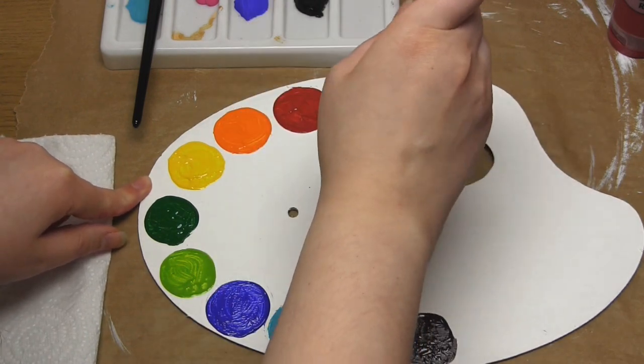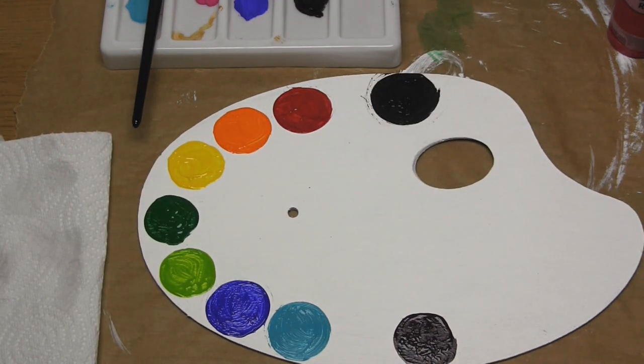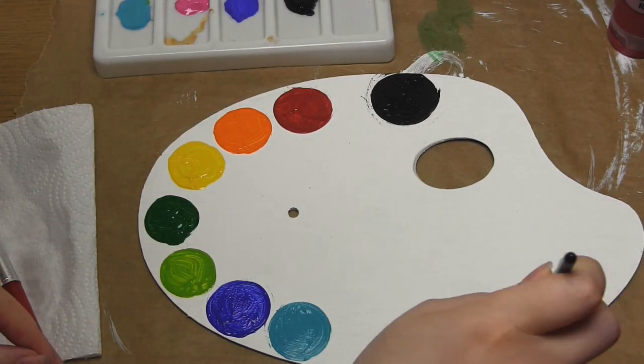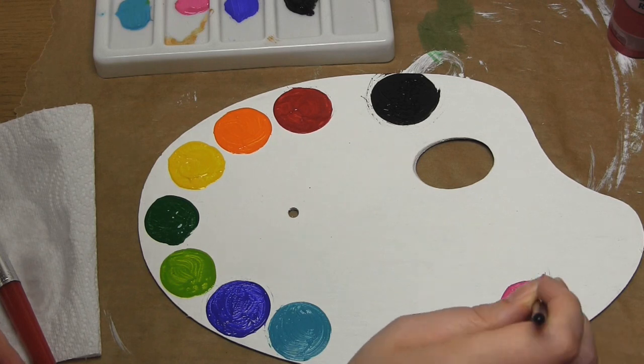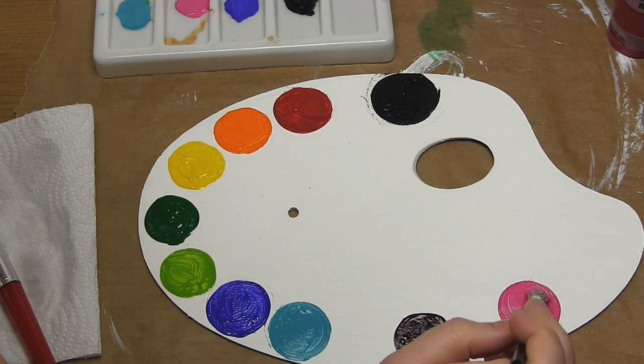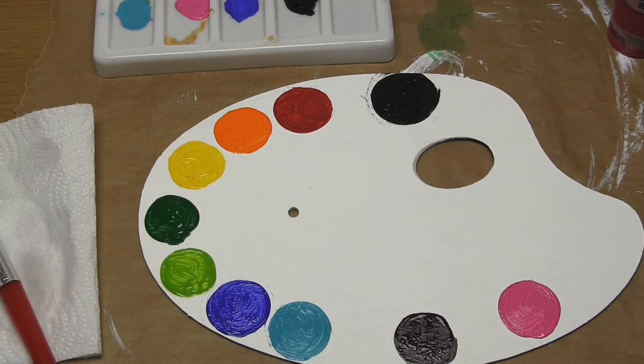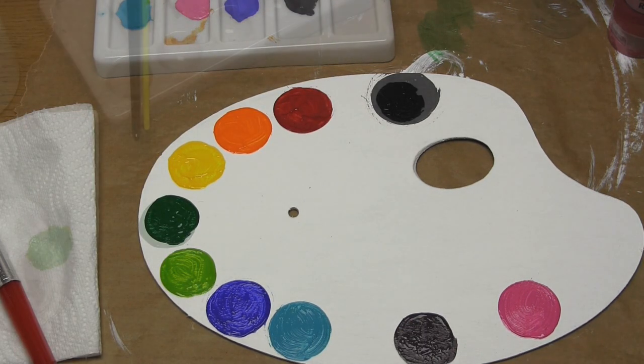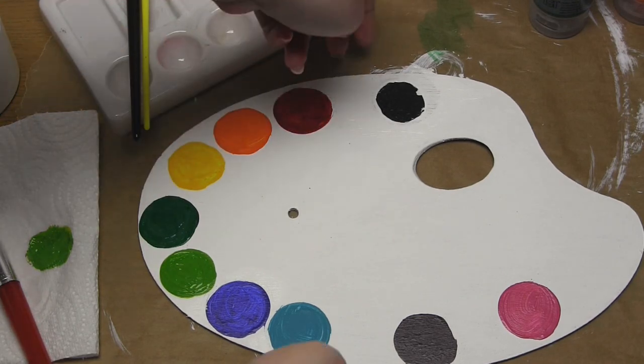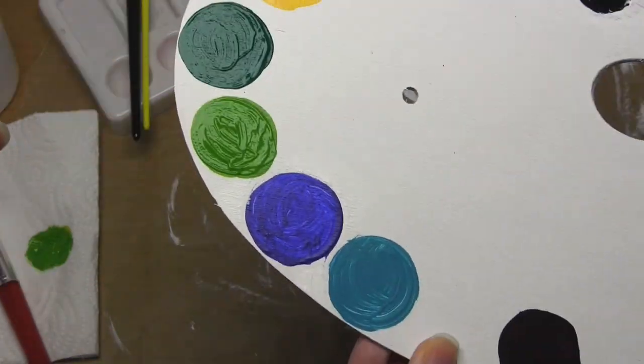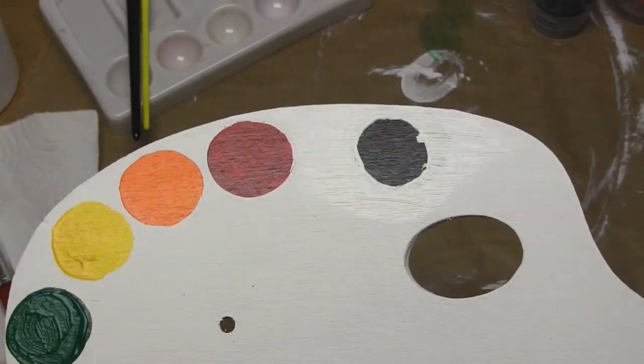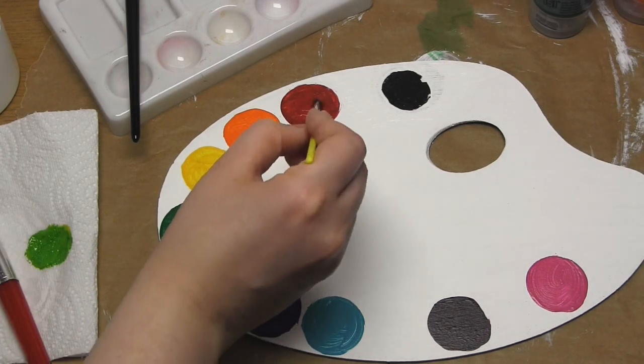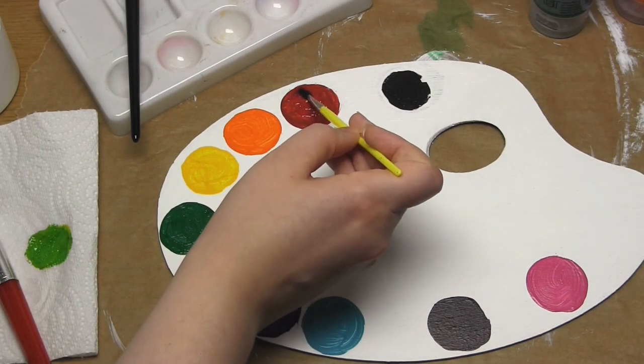As you can see, I kind of messed up the black circle and it went over the edge of the palette. So once the paint dried, I painted over the edge of it with white gesso and I did three coats. I then repainted it to make it much neater. I also used the gesso to tidy up a couple of stray paint marks as well, so don't worry if you make a little bit of a mistake or a mess because you can always cover it up.